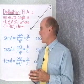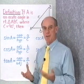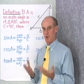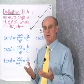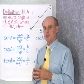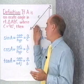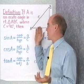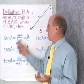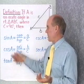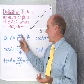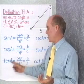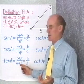This definition does not conflict with definition 1. Definition 1 works when you're working with a coordinate system and have a point on the terminal side. Definition 2 works well when you're working with right triangles in particular. We need to memorize these: sine A is opposite over hypotenuse, cosine is adjacent over hypotenuse, and tangent is opposite over adjacent.